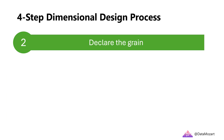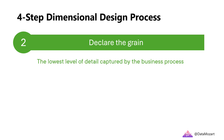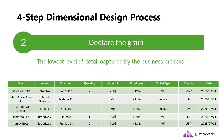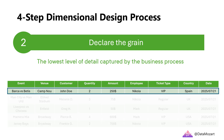The next step is to declare the grain. Simply said, that is the lowest level of detail captured by the business process. In our example, the lowest level of detail is the individual ticket sale. We will come back later to explain why choosing the right grain is of paramount importance in dimensional modeling. For now, it's just important to remember that grain refers to the lowest level of detail captured by the business process.